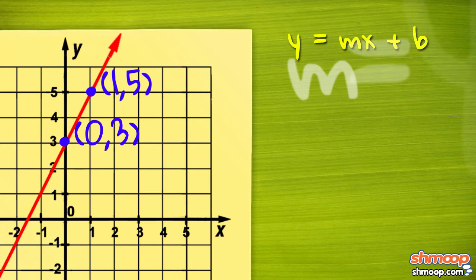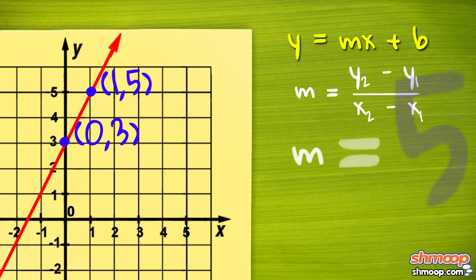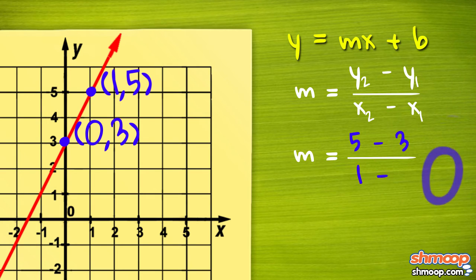Slope equals rise, the distance between the y points, over run, the distance between the two x points. When we plug in our two points, we get 5 minus 3 over 1 minus 0, or 2 over 1, also known as 2.